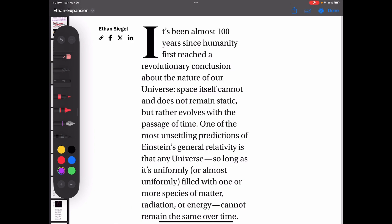And this affects the perception of distance in geometry 2, and also the perception of time in geometry 2. So here's how the main article begins. It's been almost 100 years since humanity first reached a revolutionary conclusion about the nature of our universe. Space itself cannot and does not remain static, but rather evolves with the passage of time. One of the most unsettling predictions of Einstein's general relativity is that any universe, so long as it's uniformly or almost uniformly filled with one or more species of matter, radiation or energy, cannot remain the same over time.